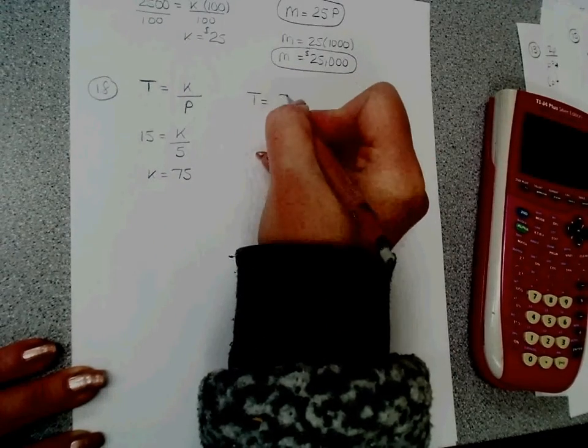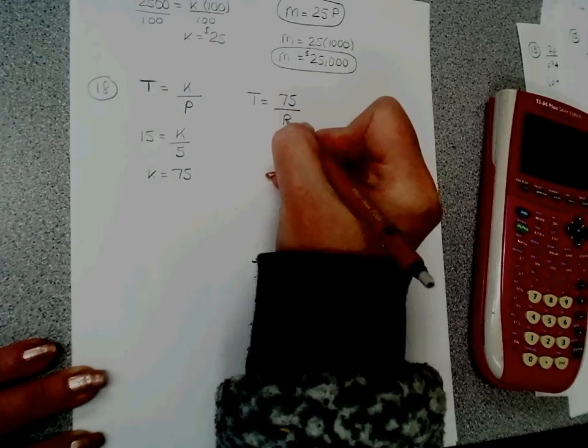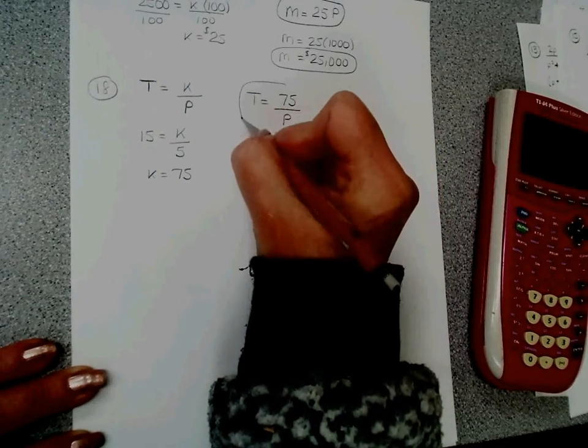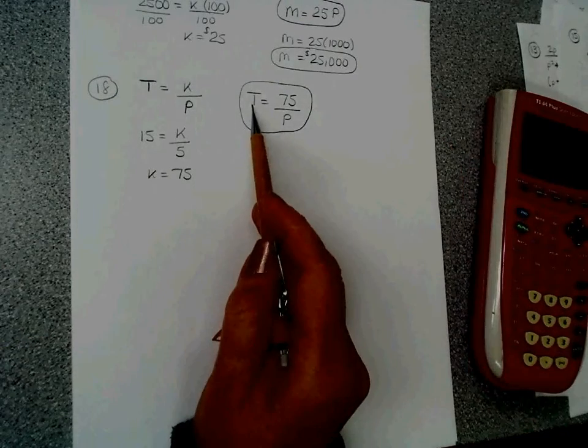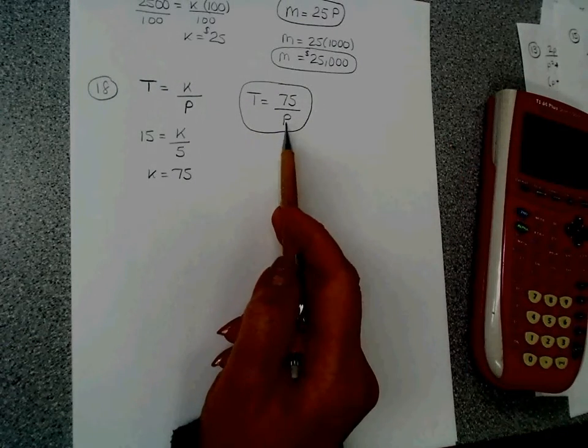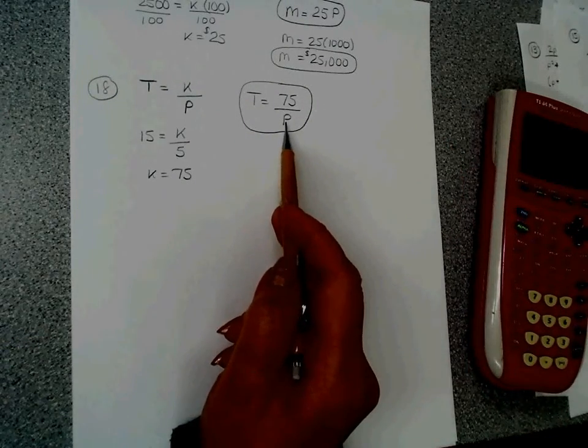So my formula is t equals 75 divided by p. If you haven't figured it out yet, Caleb has $75. The number of tickets he can buy is 75 divided by the price.